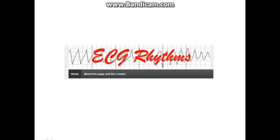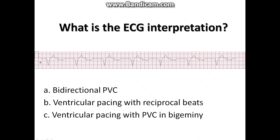Hello, this is Arnold Carmona of EKG Rhythms. I have an interesting strip today — this is the long lead 2. What is the interpretation? Letter A: bi-directional PVC. Letter B: ventricular pacing with reciprocal beats. Or letter C: ventricular pacing with PVC in bigeminy.